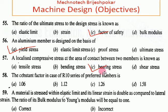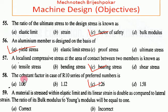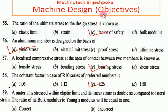The constant factor in case of the R10 series of preferred numbers — the answer is C, which is 1.26. If you want to know about preferred numbers in full detail, press the eye icon to access the definitions and theory.